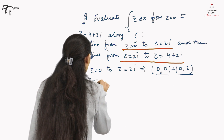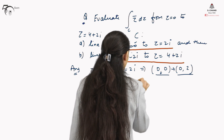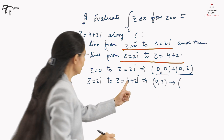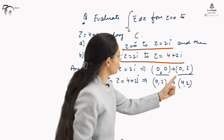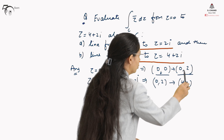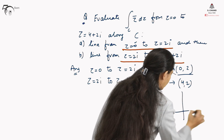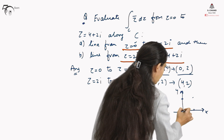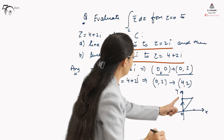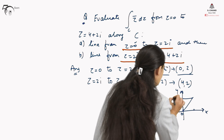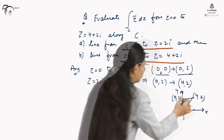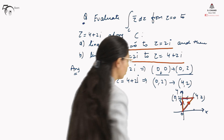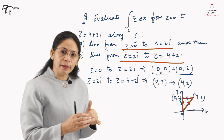The line from z = 2i to z = 4 + 2i means moving from point (0, 2) to (4, 2). So we reach from (0, 0) to (4, 2) by taking the path (0, 0) → (0, 2) → (4, 2). Drawing this in the xy-plane: from (0, 0) up to (0, 2), then across to (4, 2). We are restricted to follow this specific path.